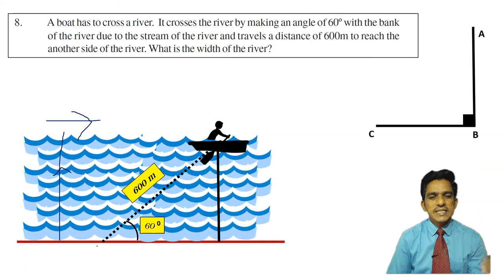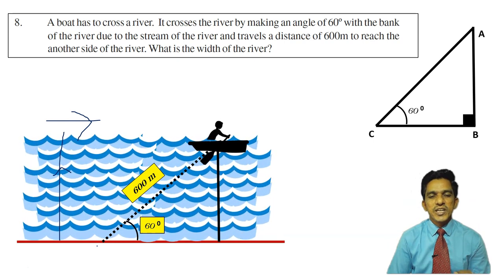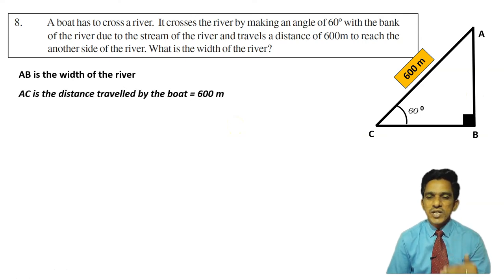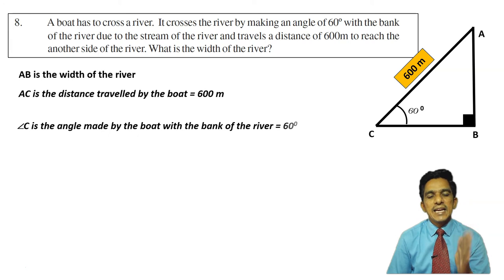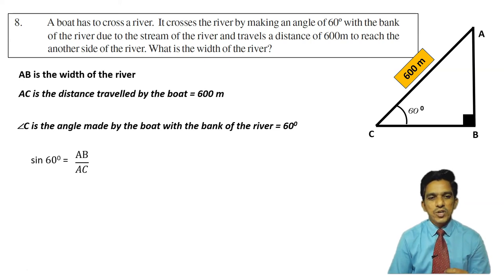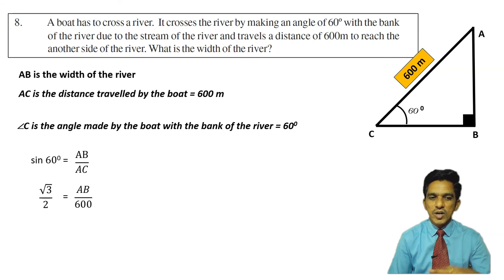AB is the width of the river. C is the starting point of the boat. AC is the distance traveled by the boat. The boat made an angle of 60 degrees with the bank of the river. AC is 600 meters. Angle C is the angle made by the boat with the bank of the river, which is 60 degrees. We have to find AB, the width of the river.